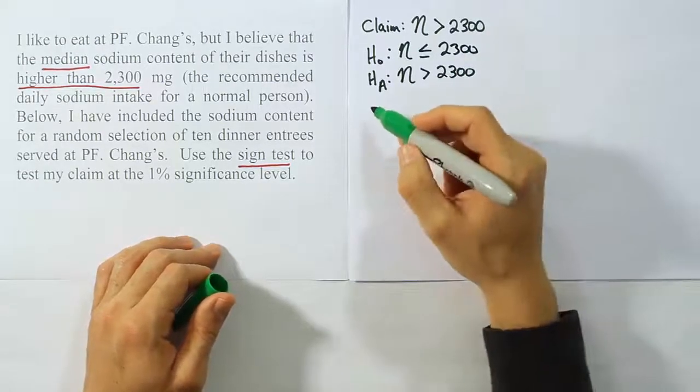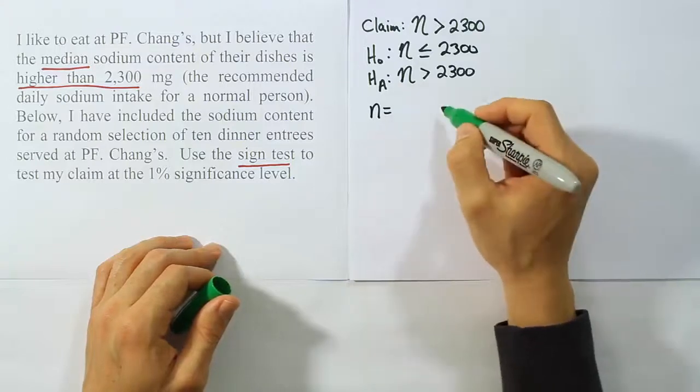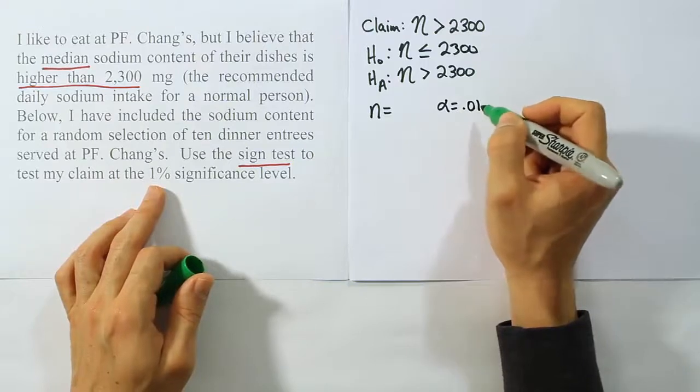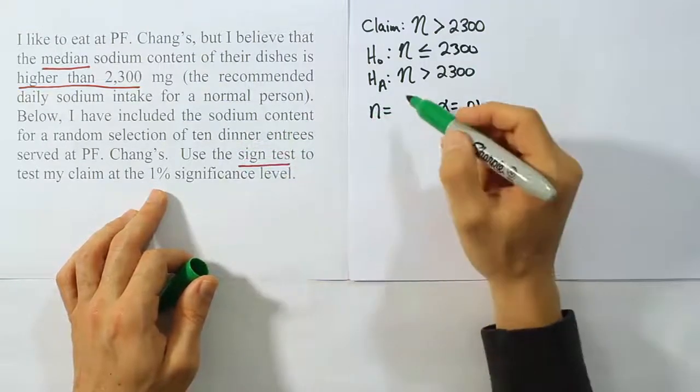Now from there, what we want to do is to talk about the sample size and alpha. Well, I can see alpha is 1%, that's very clear. Alpha is 1%.